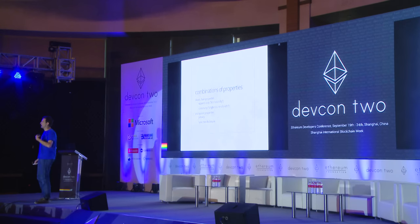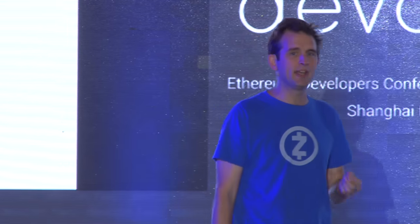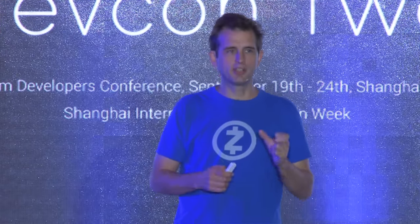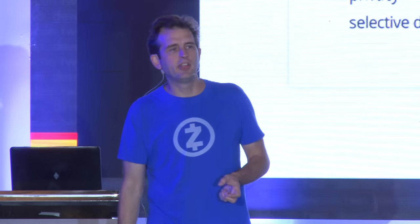Slightly less widely appreciated is the selective disclosure property of encryption. This is just an outcome of mathematics: if you're using encryption to control read access to your data, then there's some decryption key — knowledge of that secret is necessary and sufficient to get read access to the data. But that implies that if you know that secret, you could choose to share that decryption key with someone else, and that would give them the ability to see that data.